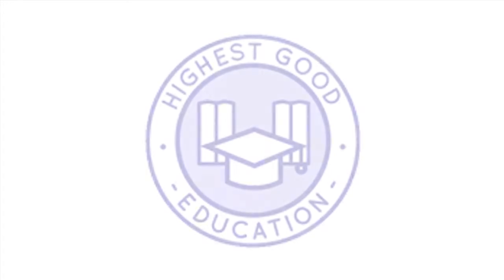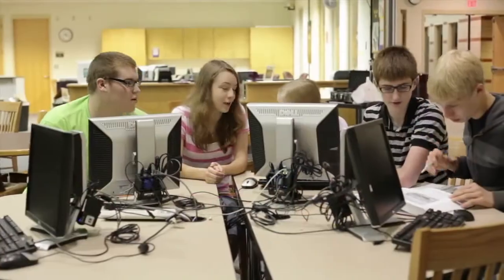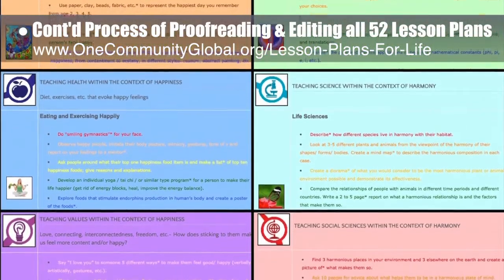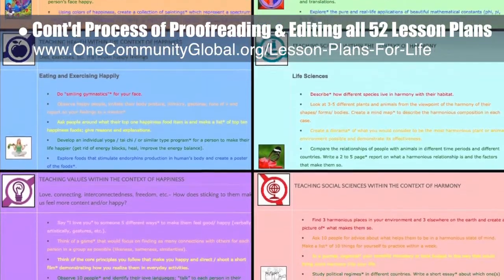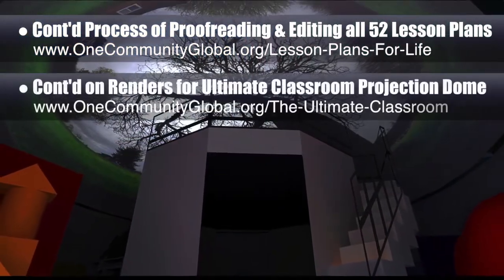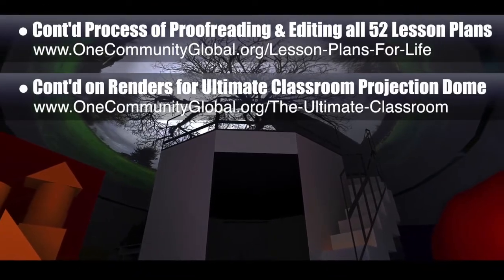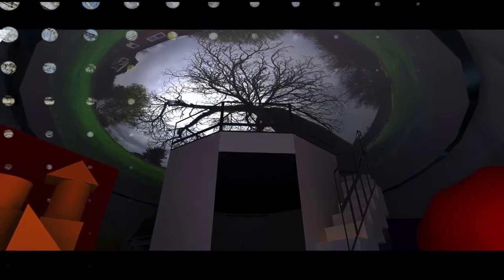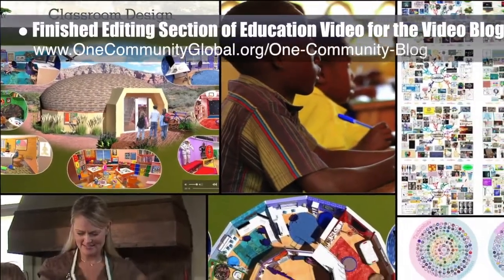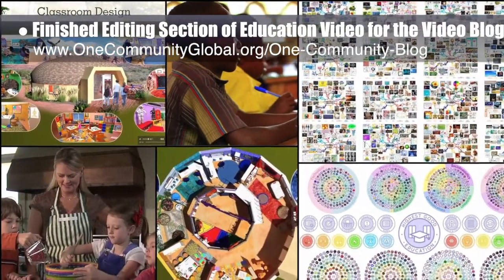OneCommunity's approach to highest good education is designed for all age groups, adaptable to any schooling environment, inspiring and fun for all participants, and includes national standards, all subjects, lesson plans, teaching strategies, learning strategies and tools, classroom design, and more. This week the core team continued final proofreading and editing of all 52 lesson plans, completing the happiness lesson plan and the harmony lesson plan — bringing us to 28 of 52 finished, approximately 54% completion. Additionally, we continued working on renders for the ultimate classroom projection dome, exploring different fisheye images with the projection tool and adjusting the lighting, and finished editing the introduction video for this section.